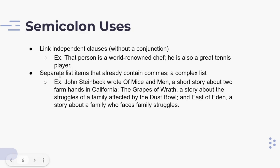A second use of a semicolon is to separate list items that already contain commas, thus making a complex list. For example: 'John Steinbeck wrote Of Mice and Men, a short story about two farmhands in California; The Grapes of Wrath, a story about a family affected by the Dust Bowl; and East of Eden, a story about a family who faces moral struggles.' In this sentence, semicolons and commas are intermixed. The elements of the list are separated by semicolons, not commas. The commas serve to separate additional descriptive information about each book from the titles themselves.